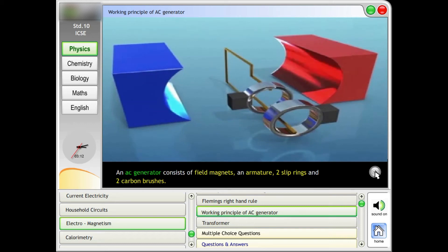Working Principle of AC Generator: An AC Generator consists of field magnets, an armature, two slip rings and two carbon brushes.